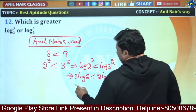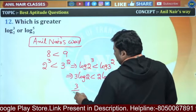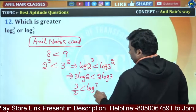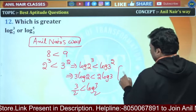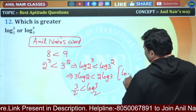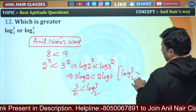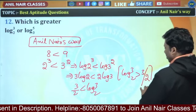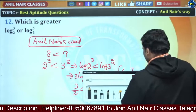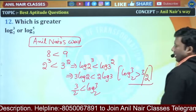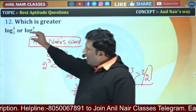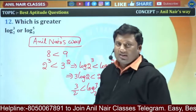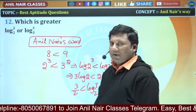Rearranging: 3 by 2 is less than log 3 base 2. That means log 3 base 2 is greater than 3 by 2. This value is greater than 3 by 2.